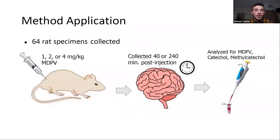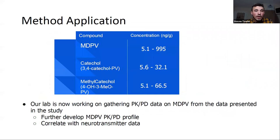We then applied our validated method. We received 64 authentic rat brain specimens to analyze for the presence of MDPV. The rats were dosed with either 1, 2, or 4 milligrams per kilogram of MDPV, and the brain samples were collected either 40 or 240 minutes after injection. The brain samples were subjected to our method in order to build a time course for the metabolism of MDPV at different doses. From this data, we see high concentrations of MDPV — the parent compound — and low concentrations of the metabolites, suggesting that the metabolites may not cross the blood-brain barrier as readily.